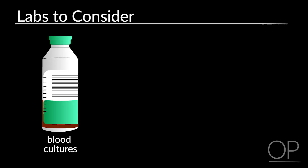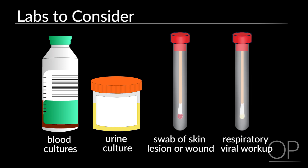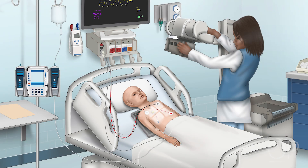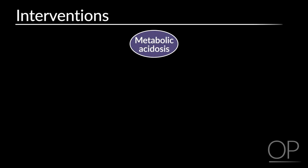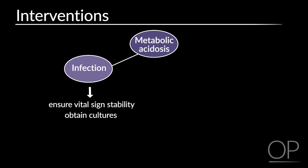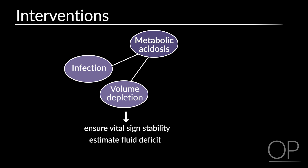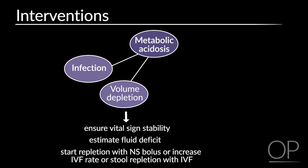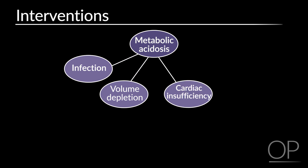Consider sending blood cultures, urine culture, swab of any skin lesion or wound, or respiratory viral workup. Obtain a chest x-ray with two views if the patient is safe to travel, or abdominal x-rays. For the patient with low bicarbonate and likely infection, stabilize vital signs, obtain cultures, and start antibiotics after considering allergies and prior infections. For the patient with volume depletion, stabilize vital signs, estimate the fluid deficit, and start repletion with a normal saline bolus, or increase the IV fluid rate, or plan for stool repletion with IV fluid. For the patient with cardiac insufficiency, monitor continuously and obtain an echo urgently.